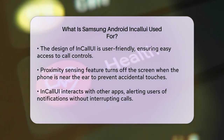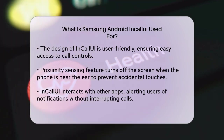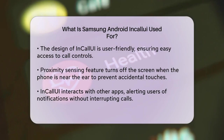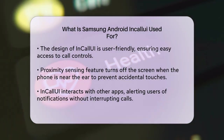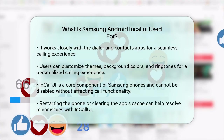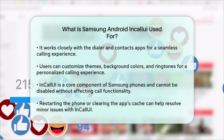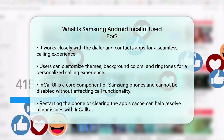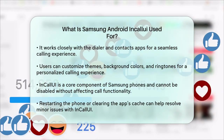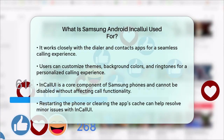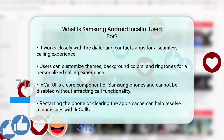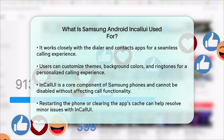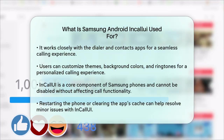You can even customize your InCall UI experience. Many Samsung phones allow you to change themes, background colors, and ringtones for incoming calls, making your calling experience more personalized. It's important to note that InCall UI is a core component of your phone's functionality and cannot be disabled. Trying to do so could disrupt your phone's ability to make and receive calls. However, if you encounter any issues, restarting your phone or clearing the app's cache can often resolve minor problems.